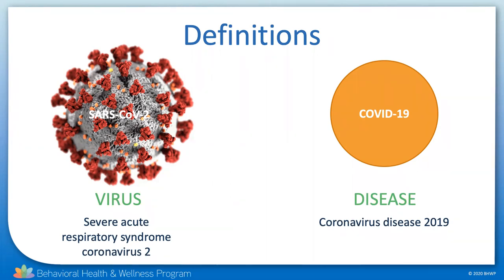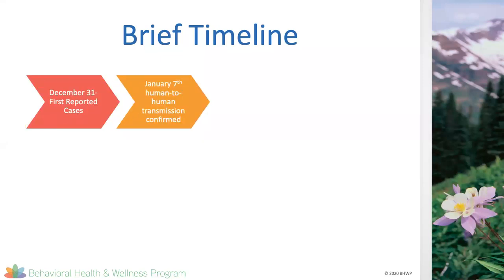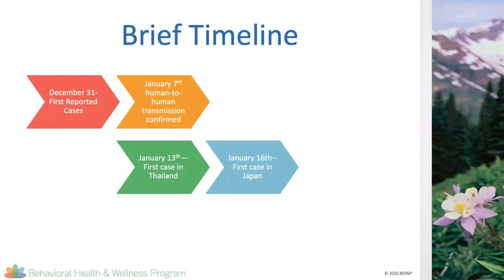COVID was first reported on December 31, 2019 in China. All the initial cases were reported to occur in individuals that had visited a local wet market, where animals are both sold and butchered on site. By January 7, it was confirmed that human-to-human transmission was occurring. The first cases outside of China were in Thailand and Japan, both in January. The first U.S. case presented in Snohomish County, Washington on January 19th. On March 17th, West Virginia became the 50th state to report a case of COVID.